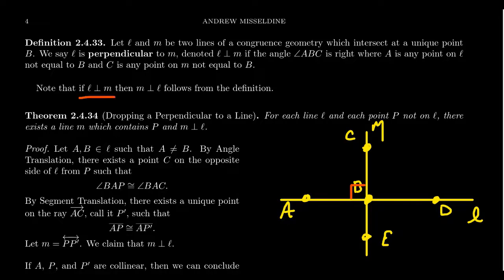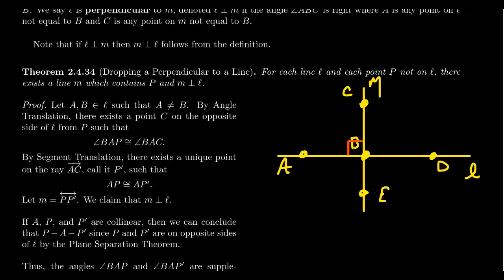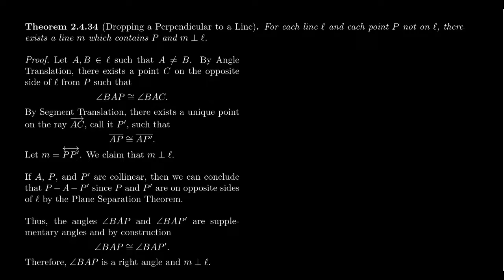Perpendicularity is a symmetric relationship: if L is perpendicular to M, then M is perpendicular to L. It doesn't make sense for a line to be perpendicular to itself, so we don't allow that. We also don't claim transitivity, since in congruence geometry two lines perpendicular to a common line will actually be parallel to each other. There's also a distinction between dropping a perpendicular to a line versus erecting a perpendicular out of a line.